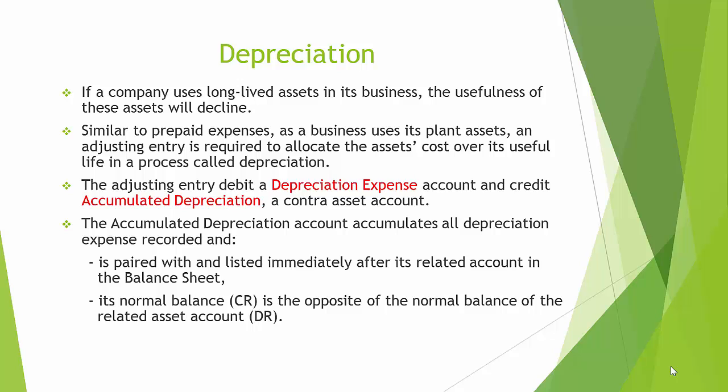Depreciation. If a company uses long-lived assets in its business, the usefulness of these assets will decline. Similar to prepaid expenses, as a business uses its plant assets, an adjusting entry is required to allocate the asset's cost over its useful life in a process called depreciation. The adjusting entry debits the depreciation expense account and credits accumulated depreciation, a contra-asset account. The accumulated depreciation account accumulates all depreciation expense recorded and is paired with and listed immediately after its related asset account in the balance sheet. Its normal balance is a credit, which is the opposite of the related asset account's normal debit balance.